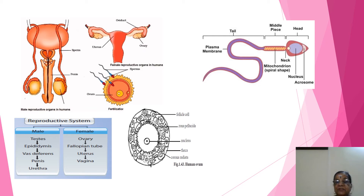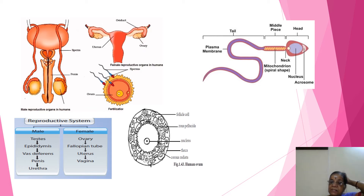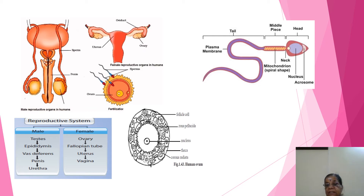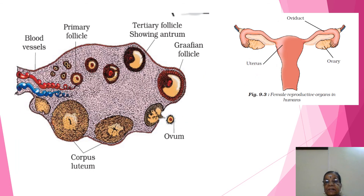The female mature ovum in humans is isolecithal — it is more than 100 millimicrons in diameter. It is formed of three egg membranes: zona pellucida, corona radiata, and an outer covering. It is present within the graafian follicle, hence called follicle-set. There is no yolk in the human ovum, so it is said to be isolecithal. We find only nucleus and cytoplasm.